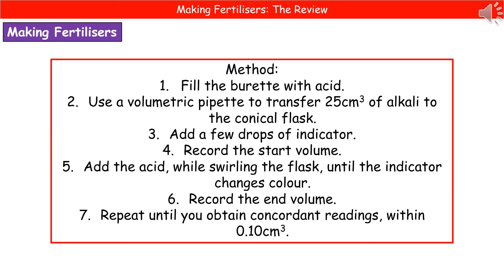A quick recap on how we carry out our titration: we fill the burette with acid, which is the long glass tube in the clamp stand. We then use a volumetric pipette to transfer 25 cm³ of alkali to the conical flask and add a few drops of a single indicator. We record the start volume, add acid while swirling the flask constantly until the indicator has its distinctive color change at the end point. We record the end volume and repeat until we obtain concordant readings, which are within 0.1 cm³ of each other.